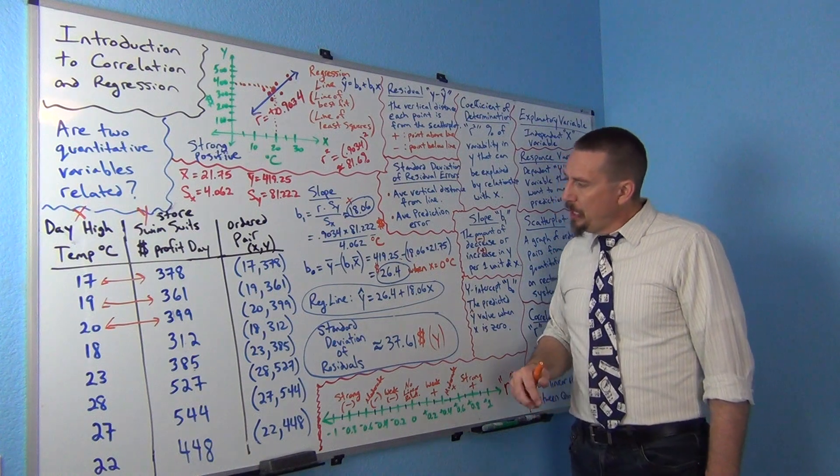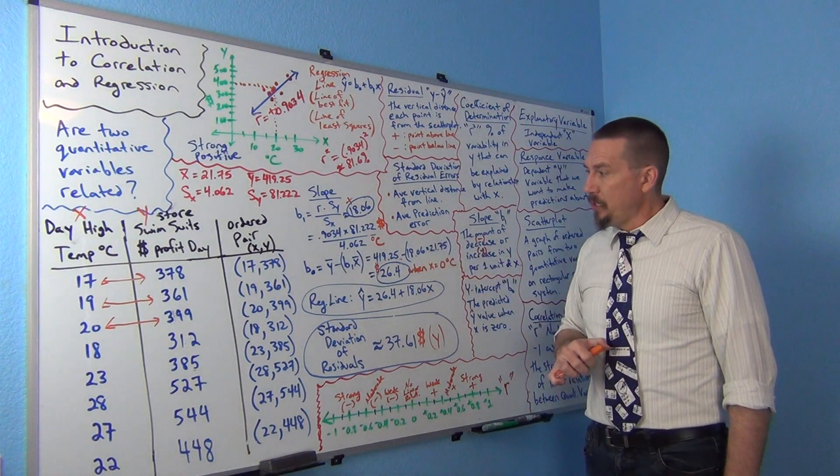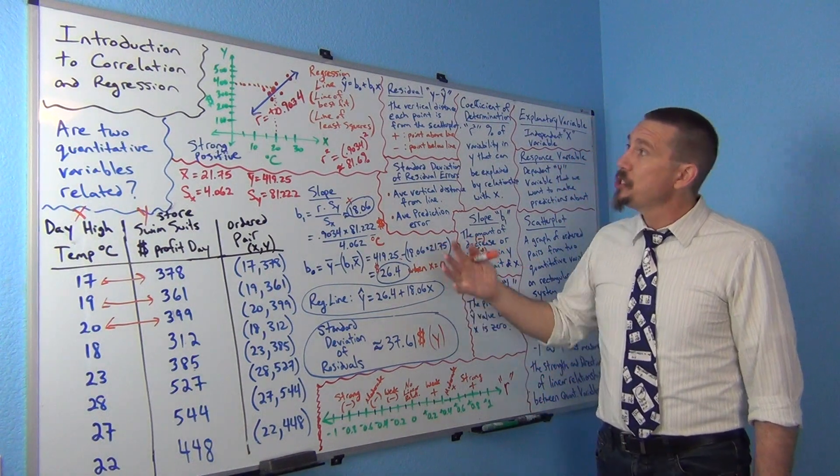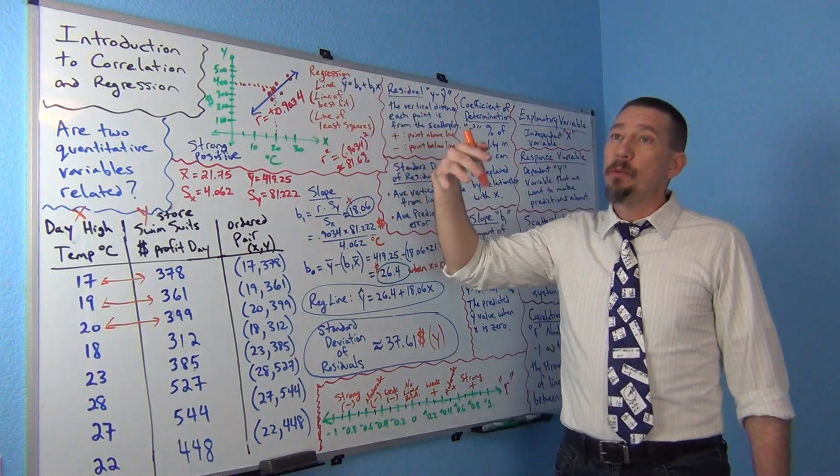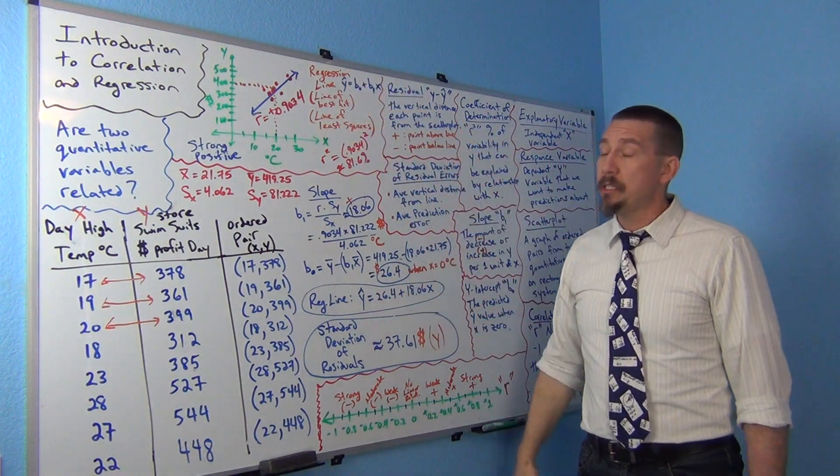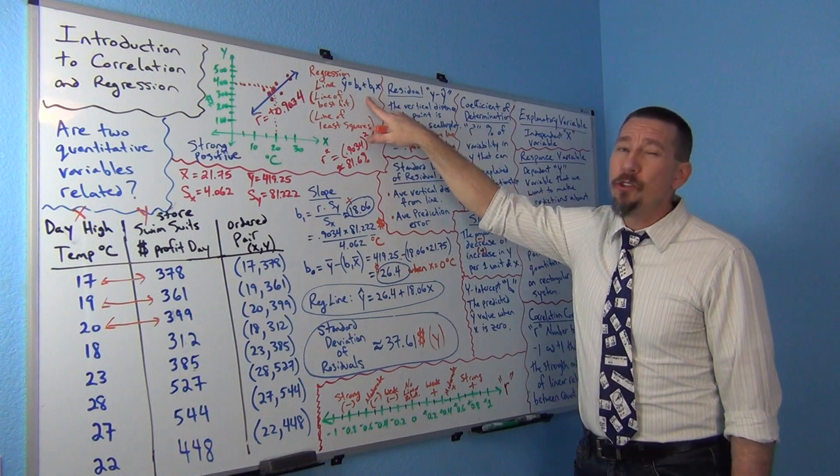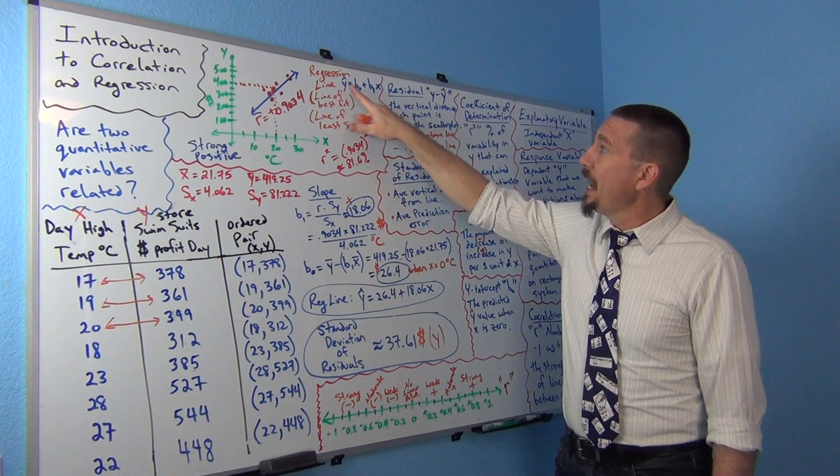Well, again, it's the y when x is zero, right? So if it was zero degrees Celsius, the predicted profits for the swimsuit would be $26.40. So that's kind of the idea with the y-intercept. So now our regression line, if you guys remember, y equals mx plus b, right, in algebra classes. Well, in stats, we usually write it the other way around. Why?